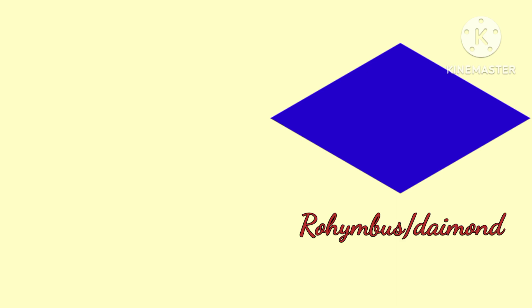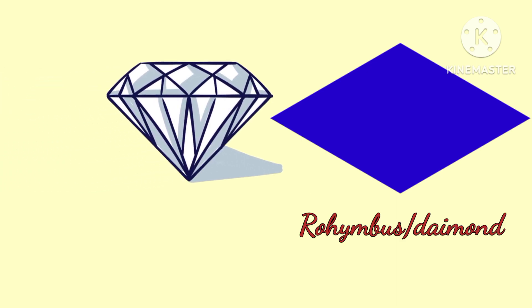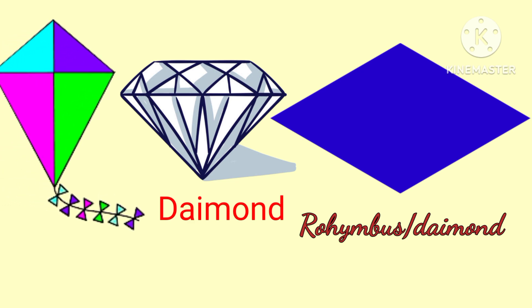Diamond. A diamond and a kite are examples of a Rhombus.